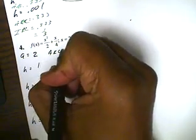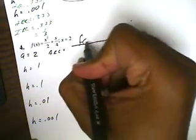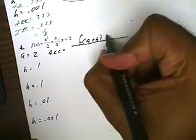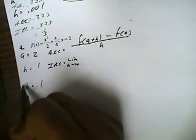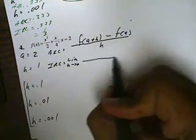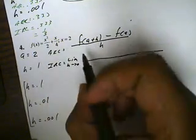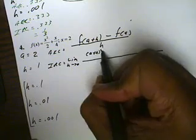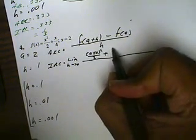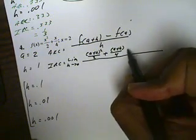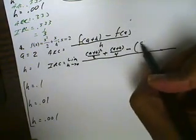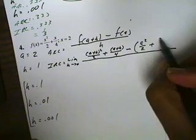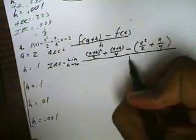The average rate of change formula is f of a plus h minus f of a, all over h. To find the instantaneous rate of change, we'll take the limit as h goes to 0. Replacing x with a plus h gives us (a plus h) squared all over 2 plus (a plus h) all over 4, minus the parenthesis a squared over 2 plus a over 4, all divided by h.